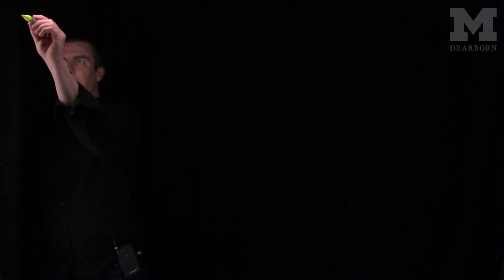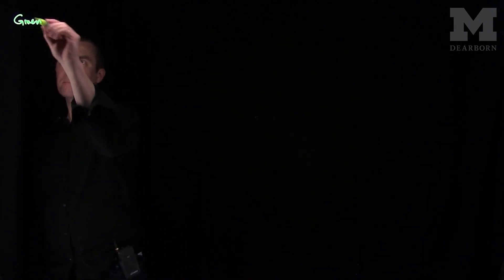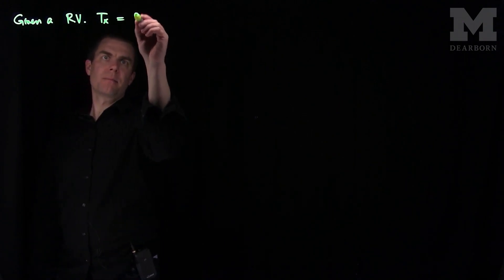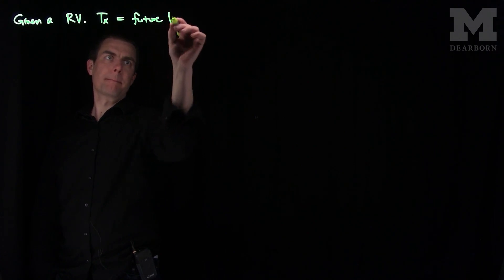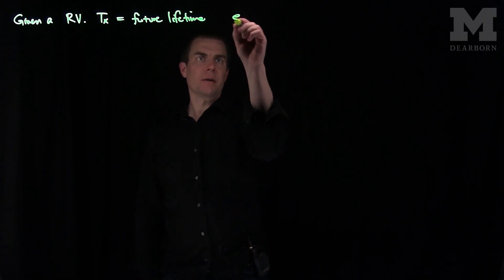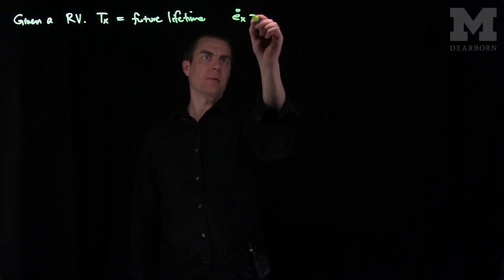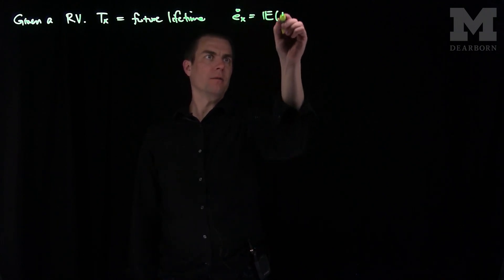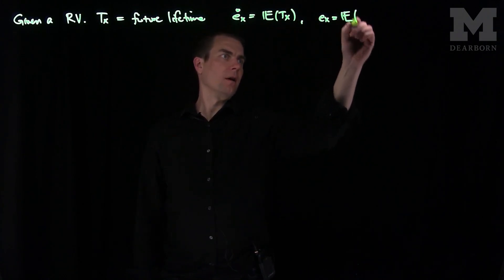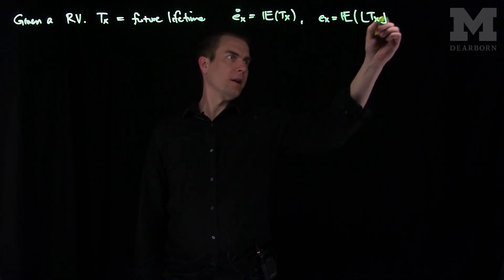Hello students! In this video we'll discuss several recursive formulas for complete and temporary expected lifetimes. If we're given a random variable Tx for a future lifetime, then we can define the circle-E of x as the expected value of Tx, and Ex without a circle to be the expected value of the floor of Tx. That's the curtate expected value.